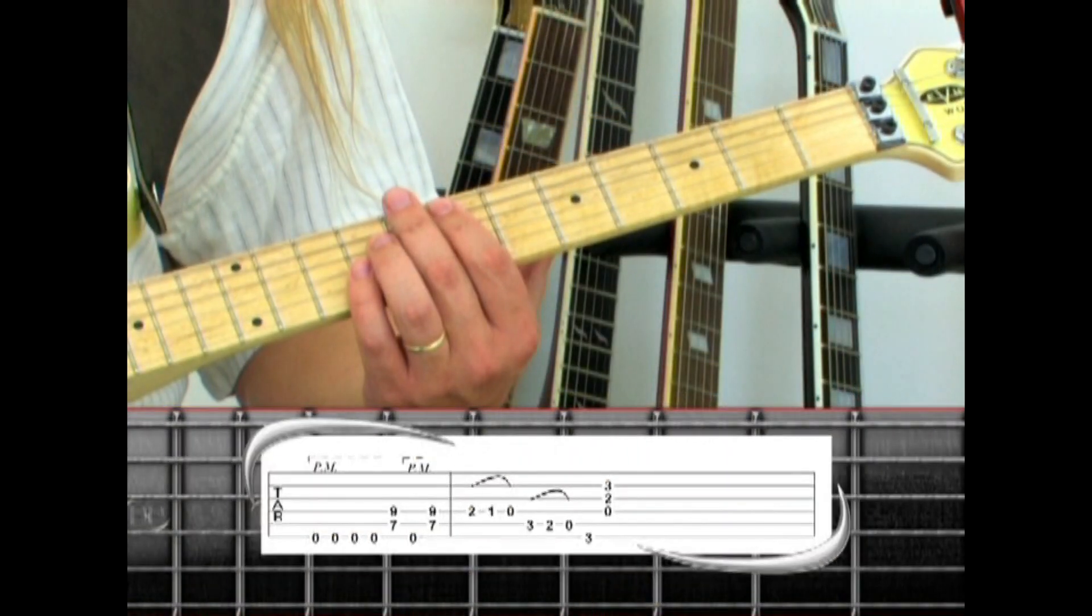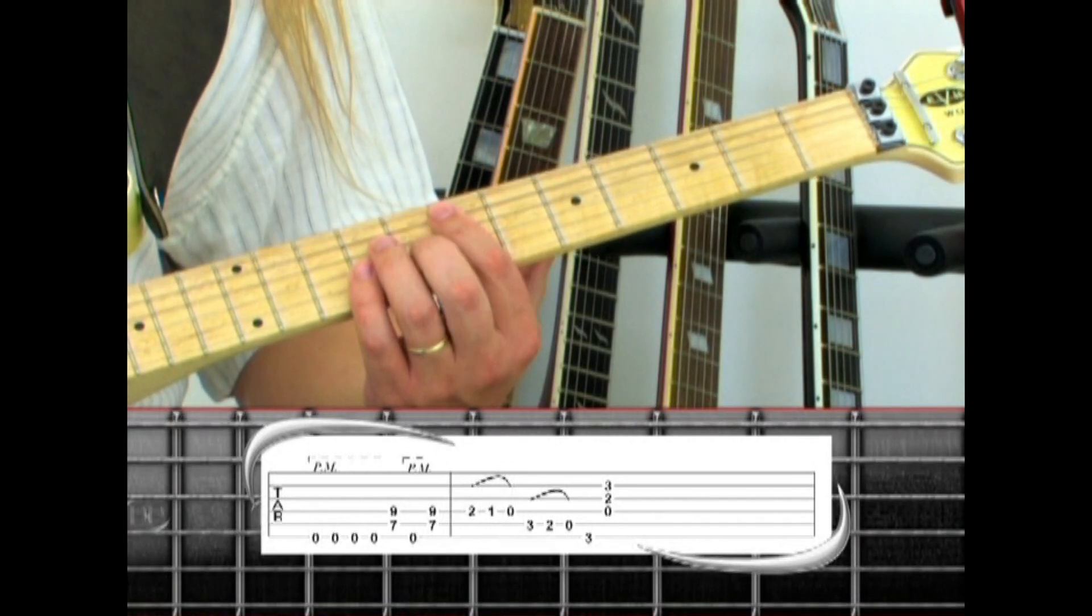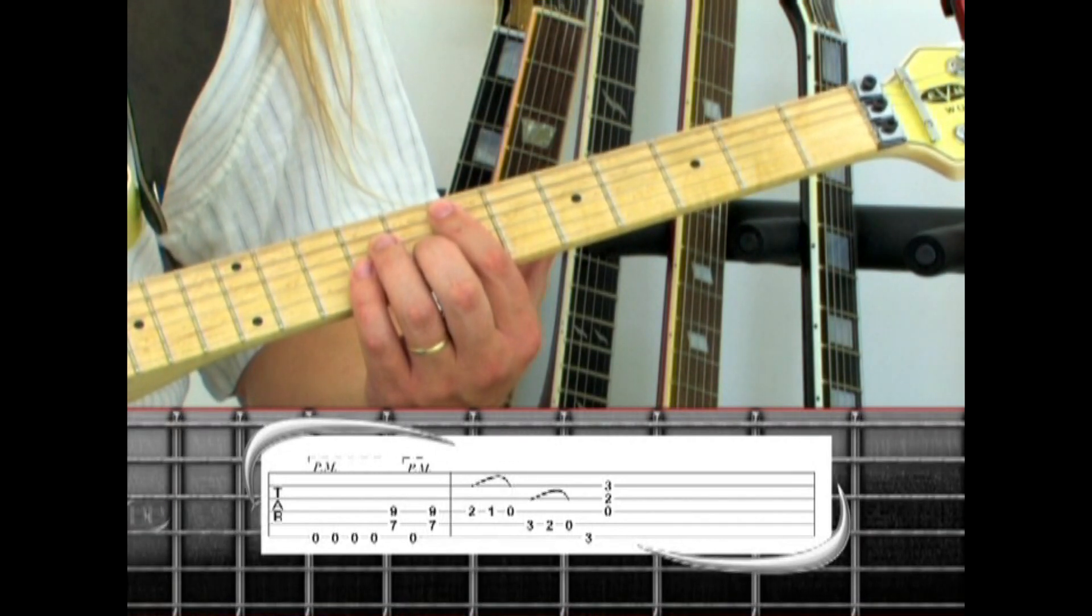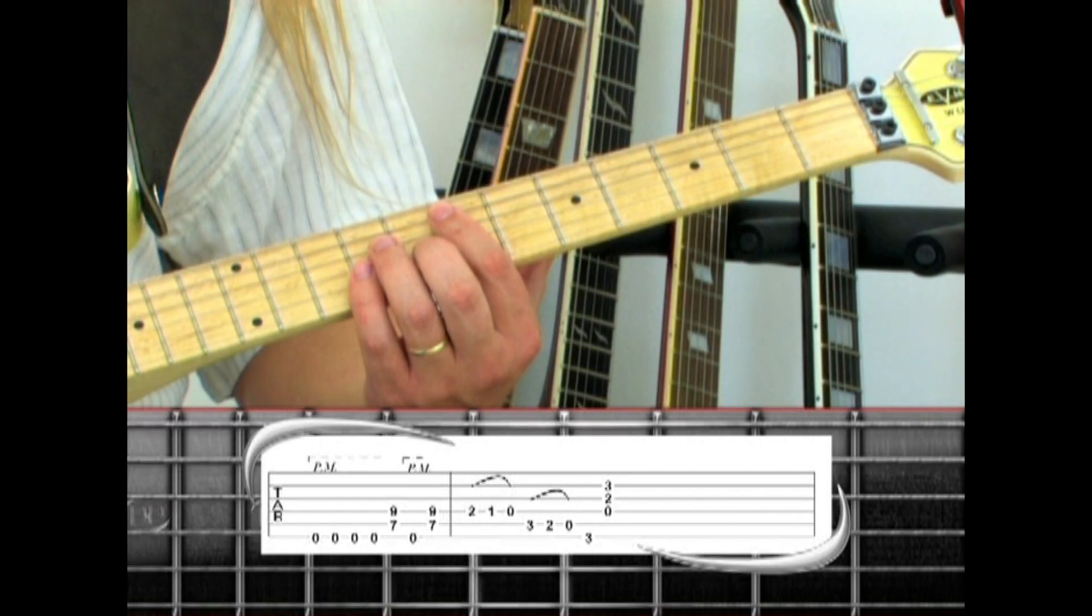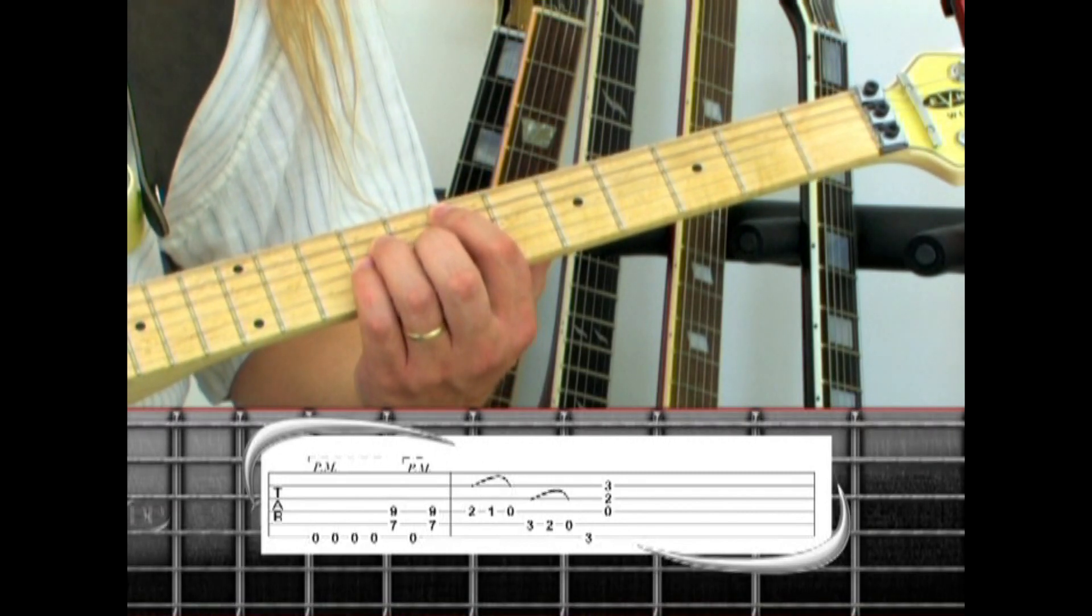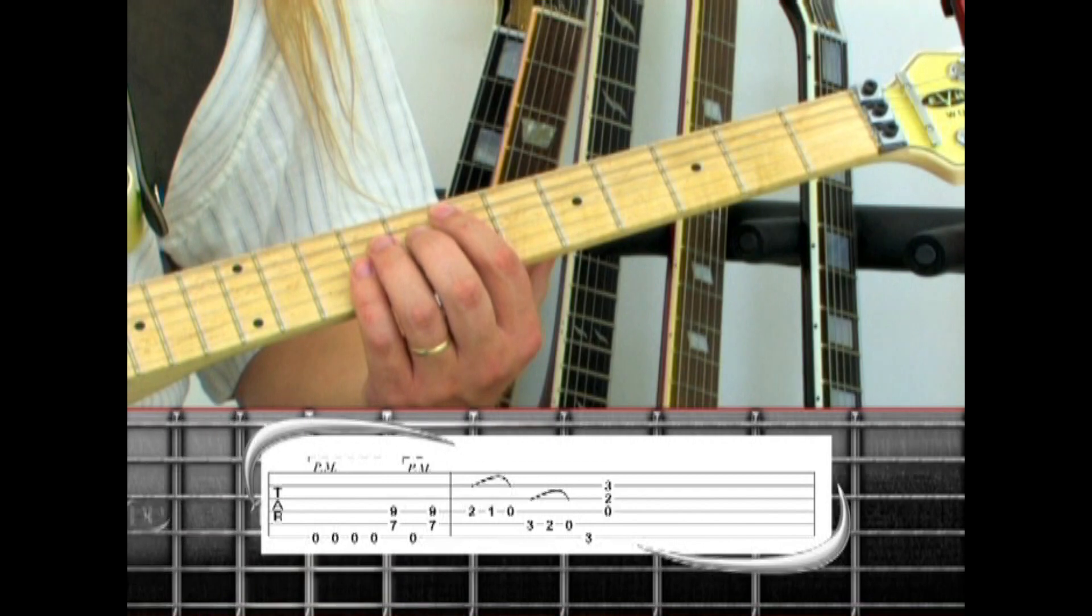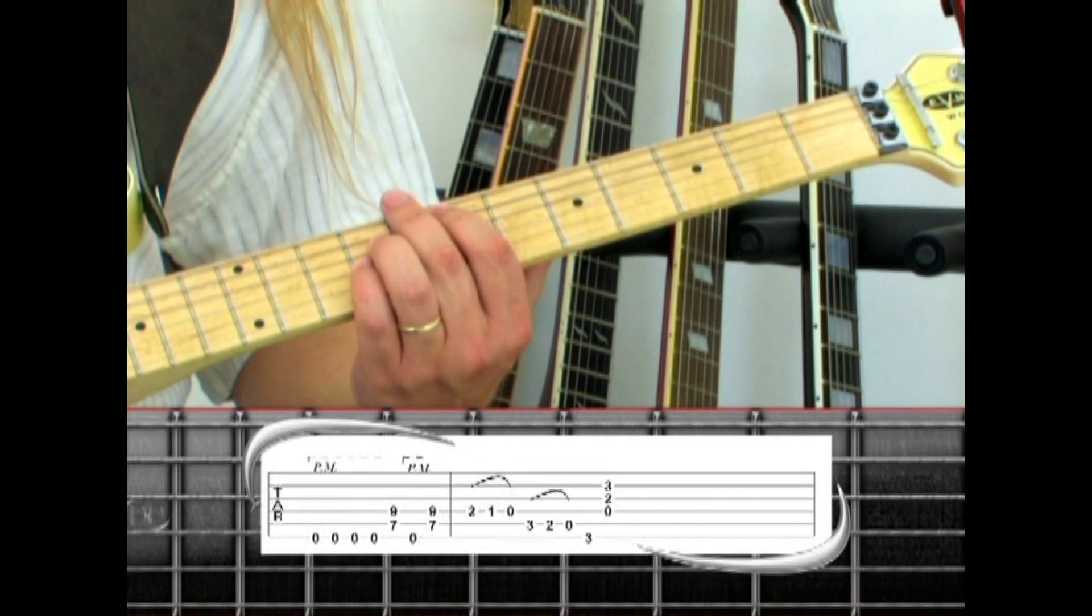In the start of the second chorus, there are four open E pedal tones instead of three. This is followed by a fifth string seventh fret E5, pedal tone, and E5. The rest of the chorus is the same.